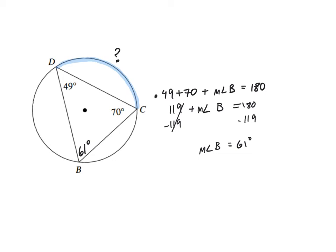The next thing I know is that the measure of an intercepted arc is equal to twice the measure of its inscribed angle.